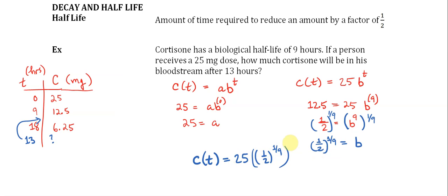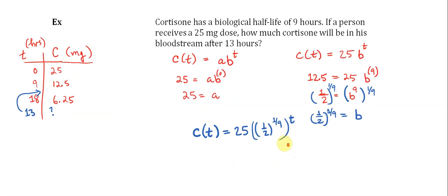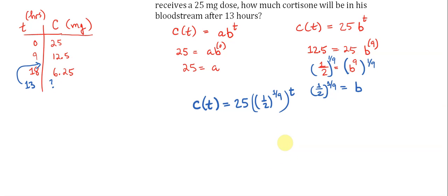I'm going to clean this up and simplify it just a little bit further. I'm going to say this is equal to 25 times one half, and instead of one ninth times t, I'm just going to write t over nine. So this is our function that takes in time and produces the amount of cortisol that's in the bloodstream.